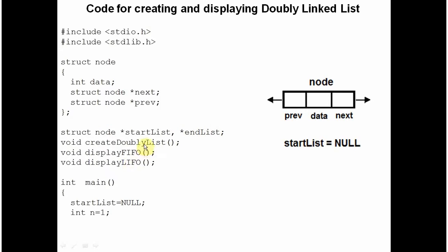These are the three function prototypes. I will be having three functions in this program. One will be create_double_list, which will be used for creating a double linked list. Display FIFO will traverse the nodes of the double linked list in first-in-first-out order — the order in which elements were inserted. Display LIFO will traverse the double linked list in reverse order, that is the reverse of the order in which elements were inserted.